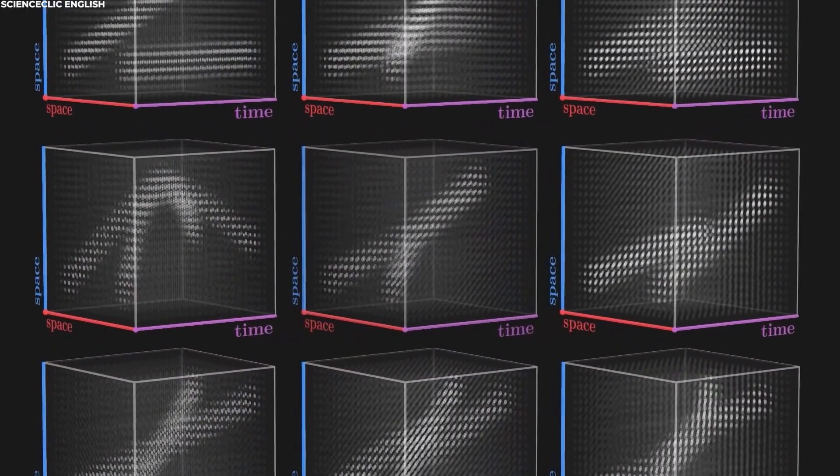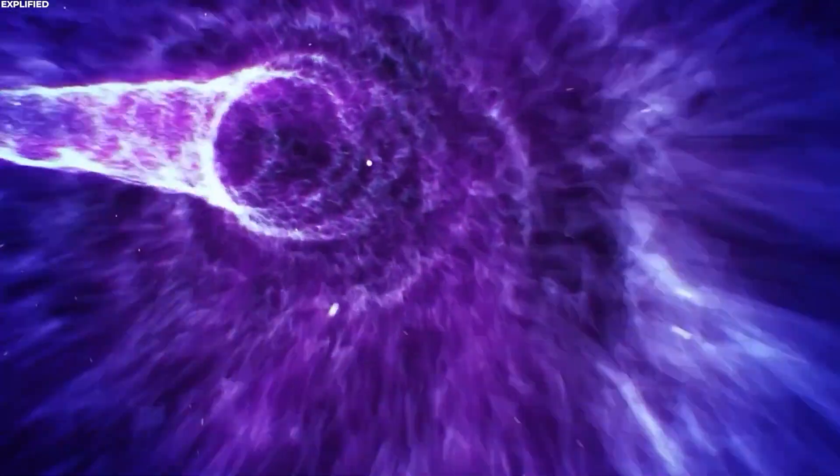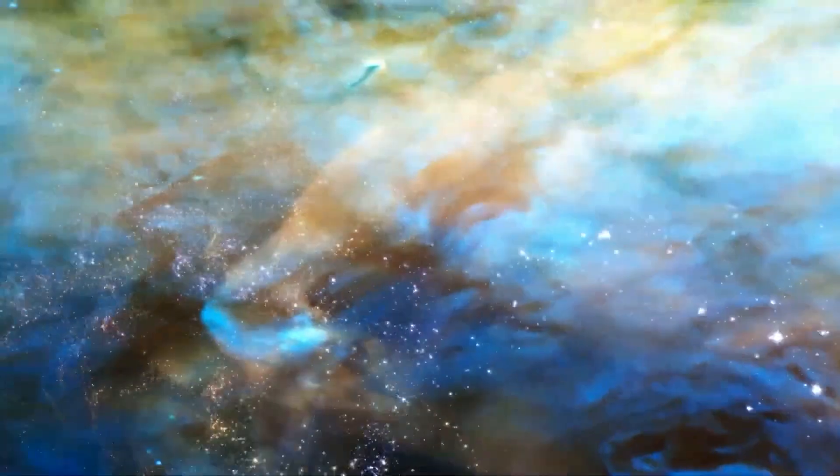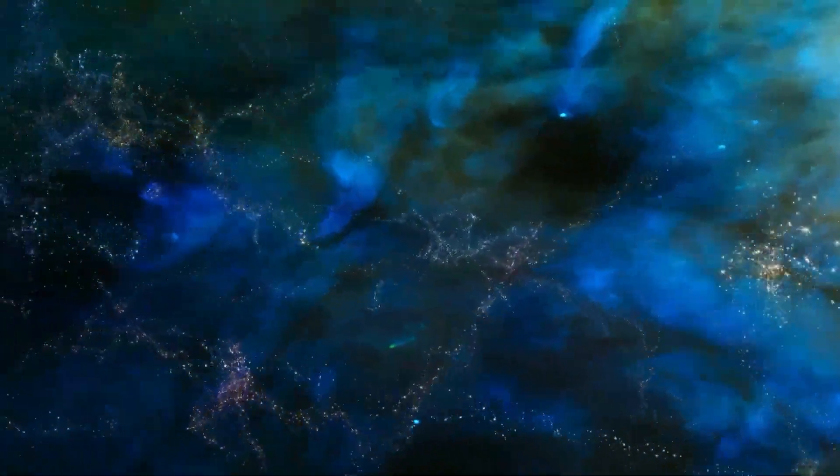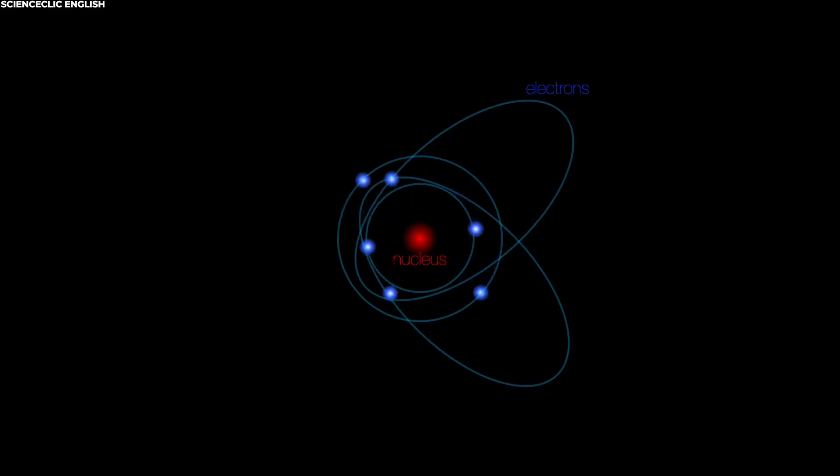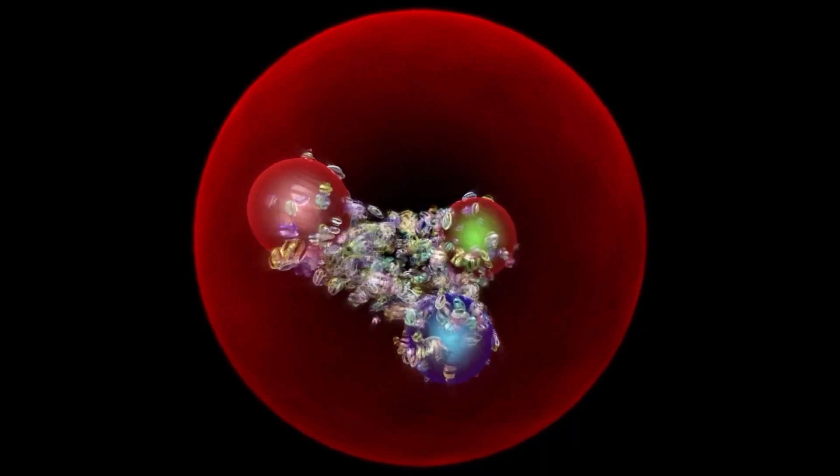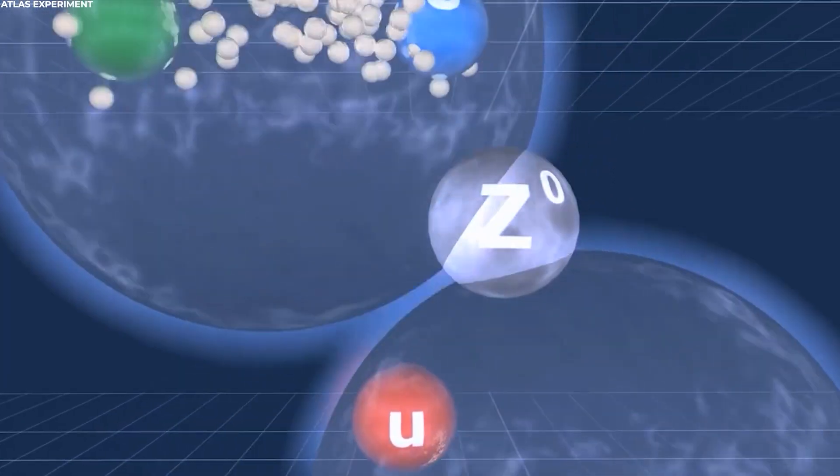Quantum field theory also has its own applications in the standard model. It treats particles as excitations or disturbances in underlying fields that extend throughout space. Each particle type corresponds to a specific quantum field. Particles are viewed as quanta of their respective fields, and interactions occur through exchanges of these field quanta. Symmetry breaking within the electroweak theory is attributed to the Higgs field. This field interacts with other particles, giving rise to the masses of certain particles like the W and Z bosons and fermions.